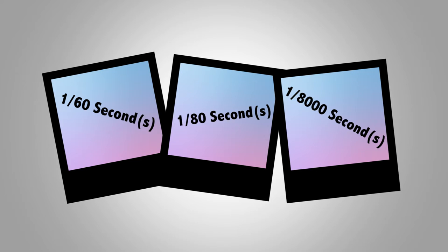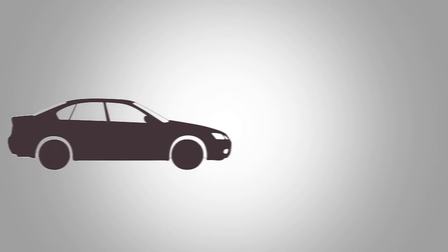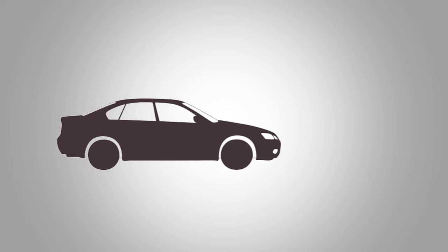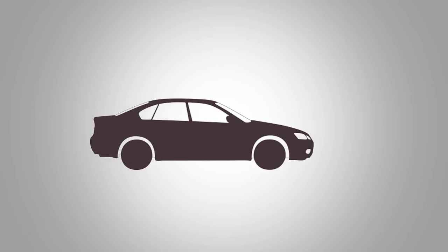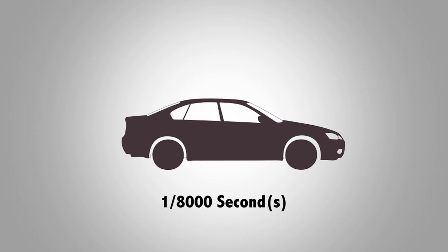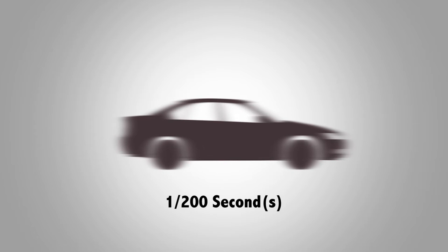Shutter speed can even be more than 1/8000th of a second in professional cameras. The shutter speed is directly related to the motion blur we get in a photograph. If we use a shutter speed of 1/8000th of a second, everything will seem rock still and intact. If we lower it to around 1/200th of a second, we can see some motion blur when shooting fast moving objects such as bikes or cars. And if it is lower than 1/16th of a second, we can even see blurriness in regular human movements of arms and legs.